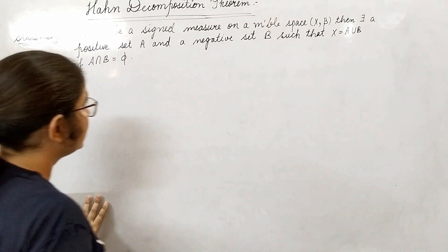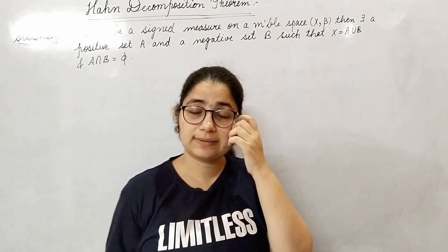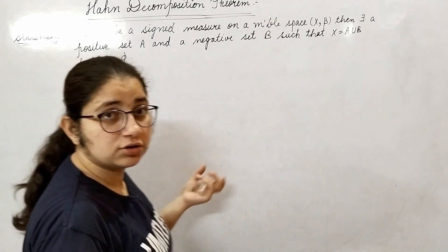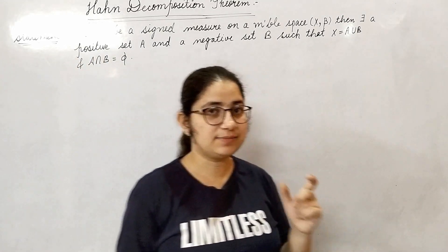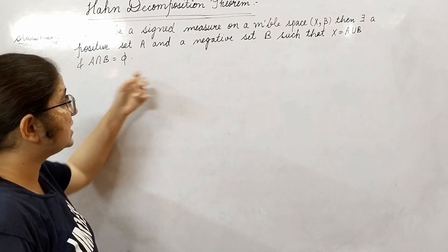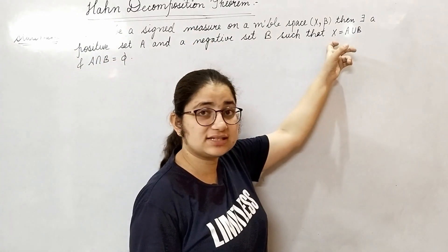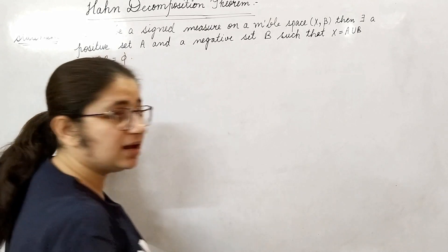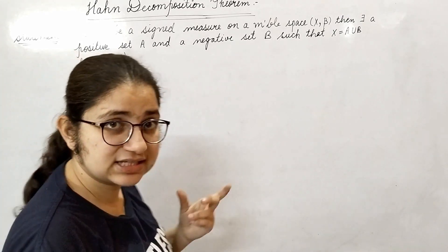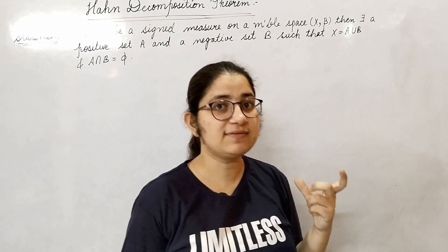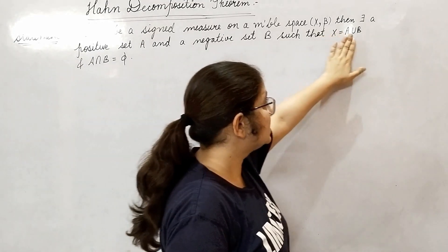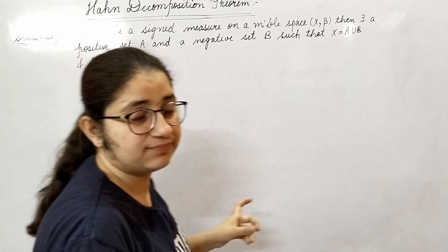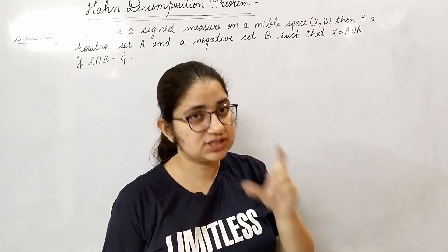What does this theorem say? It says that you have a measurable space (X, β). There will be two sets A and B such that A is a positive set and B is a negative set, such that X is the union of these two sets, and those two sets will be disjoint. We need to show the existence of two such sets which are positive and negative, where X is their union and their intersection is empty.